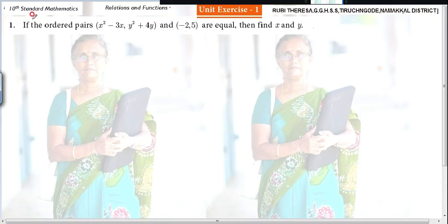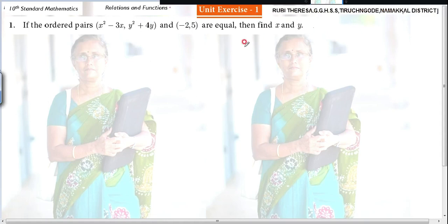If the ordered pairs x squared minus 3x, y squared plus 4y and minus 2, 5 are equal, then find x and y.